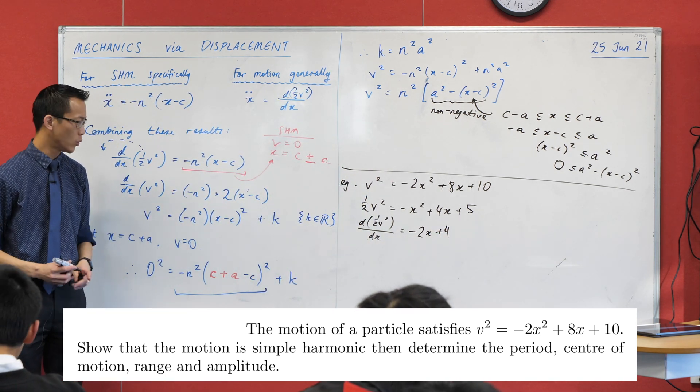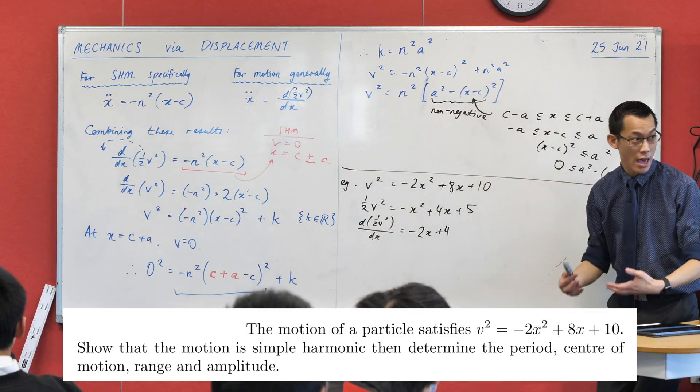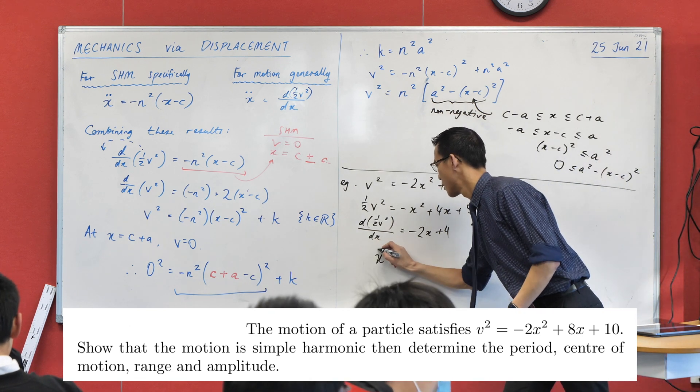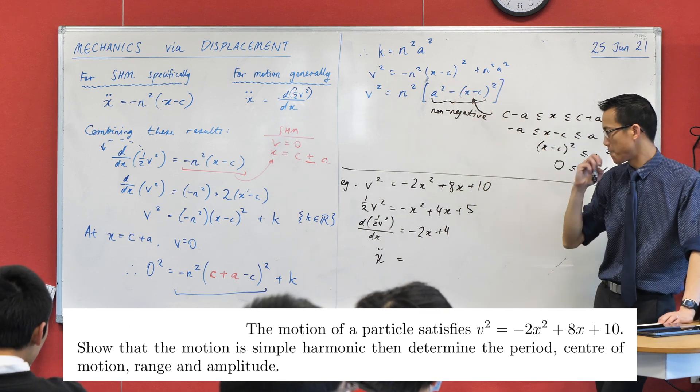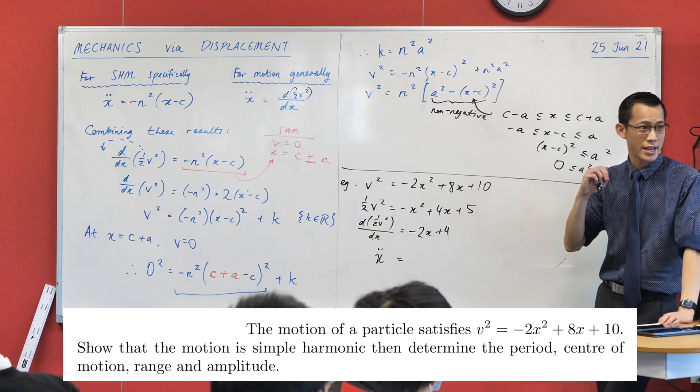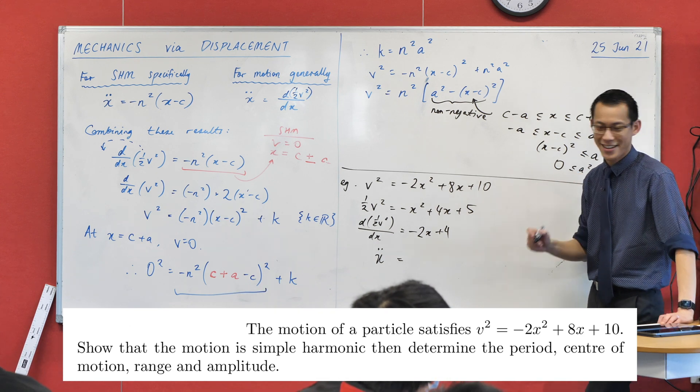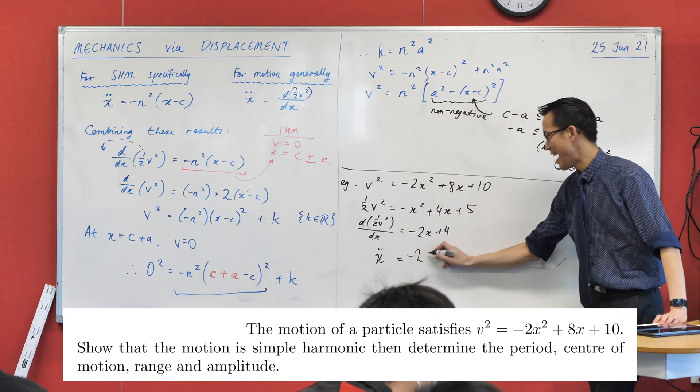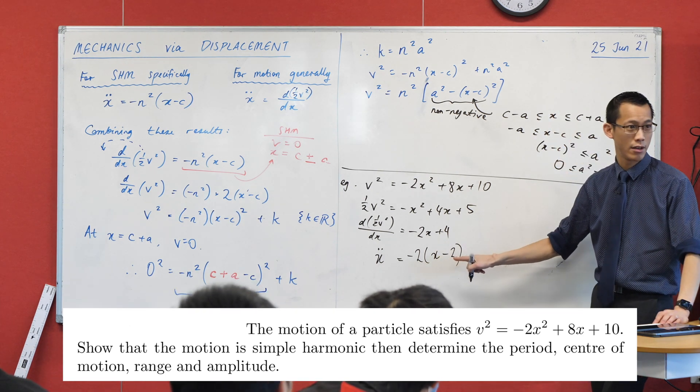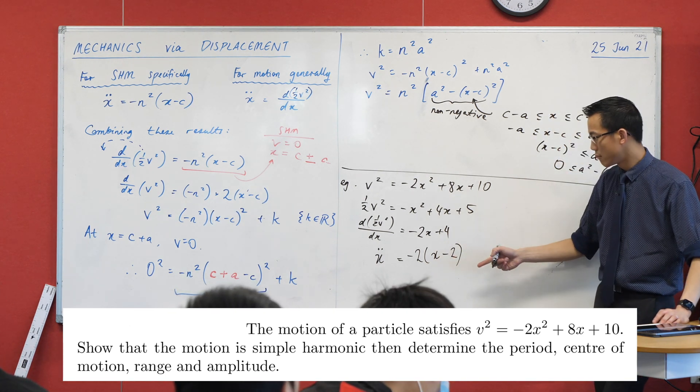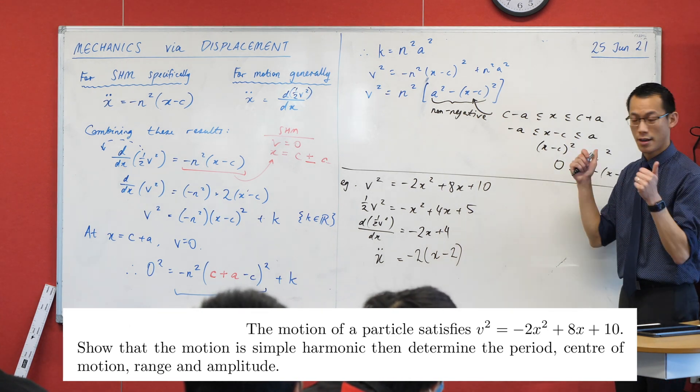Where can I take this? What is the left-hand side equal to? By definition, this is acceleration. X double dot. And then what I want on the right-hand side is something of that format. What am I going to factorize out? 2? I reckon I'm going to go better than 2. I'm going to go minus 2, right? Minus 2 out the front. And that leaves me with x minus 2 because of that double negative there. Right? So, number 1. Have I proven that it is simple harmonic motion? Tick. This is the differential equation that I wanted. That's the first thing.